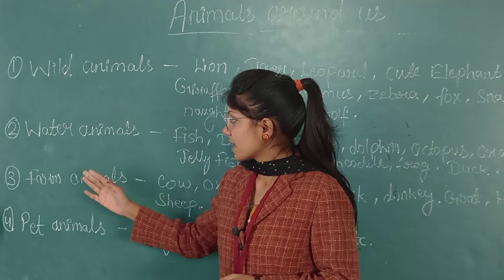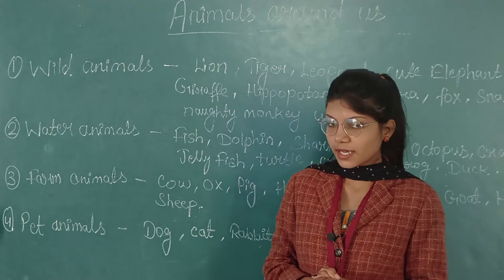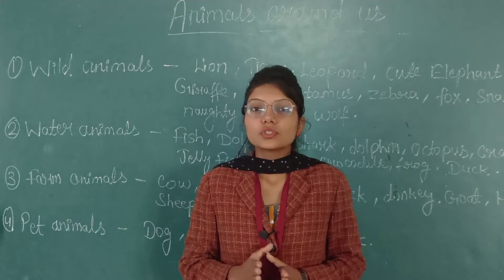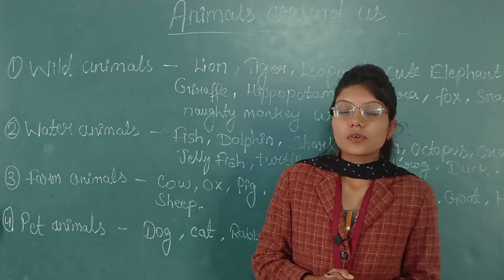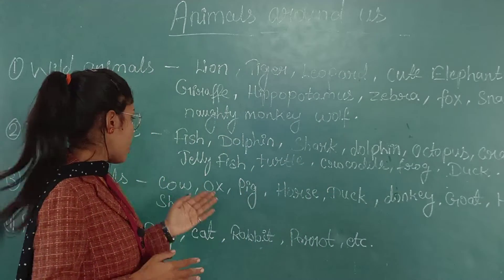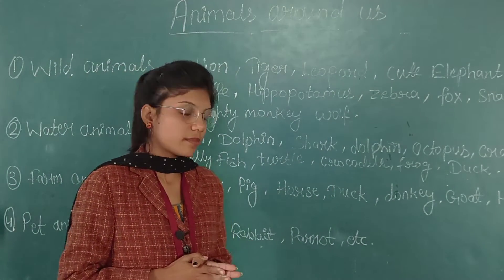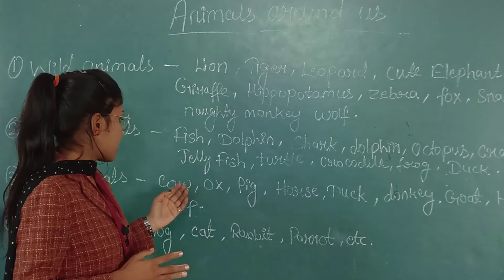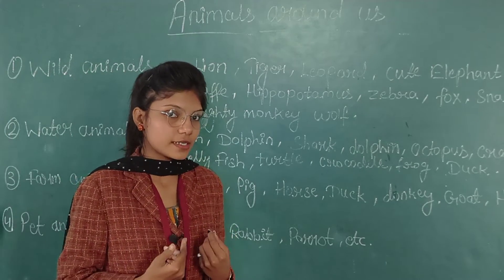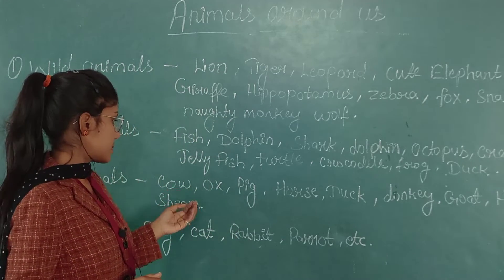The next topic is farm animals. Farm animals are those animals which we see around us. They are also called domestic animals, and they are very helpful to us.